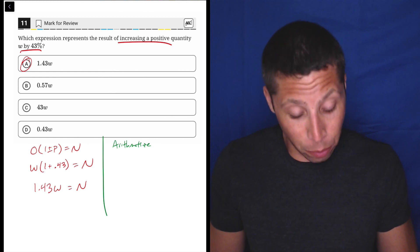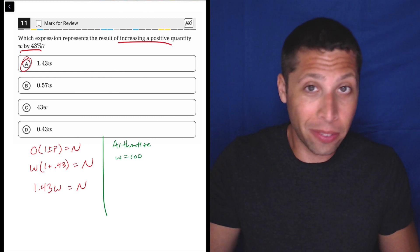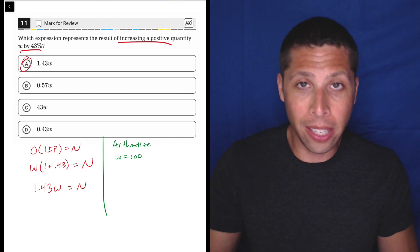And what's a great number to work with when you have percentages? How about 100? Because then we don't even really need the calculator. What does it mean to increase 100 by 43%?